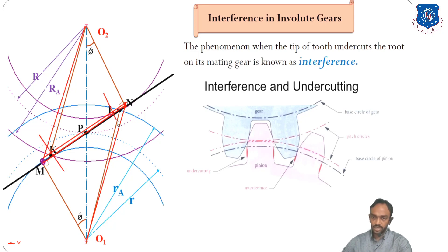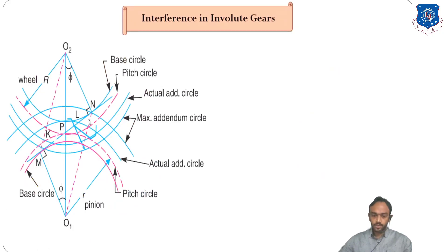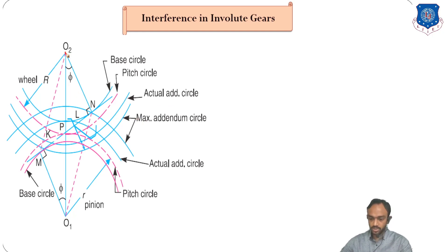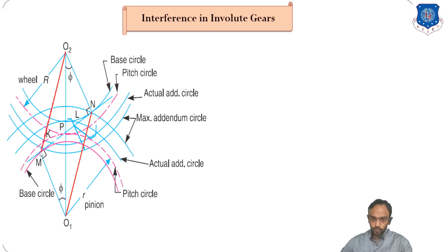We have already found the KL value as the normal length of path of contact, but the maximum possible length of path of contact is MN. In this figure, there is a base circle, a pitch circle, and an actual addendum circle — K is the point where we found KL as the path of contact for the actual addendum. The maximum possible addendum circle length can be up to point M for the wheel and up to the corresponding point for the pinion. The length of path of contact for maximum addendum is MN, and we need to find O1N, the addendum radius.